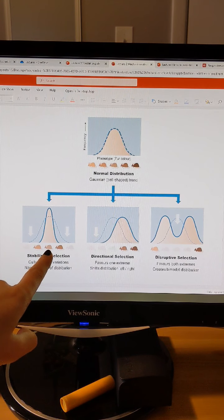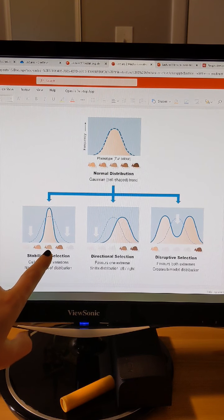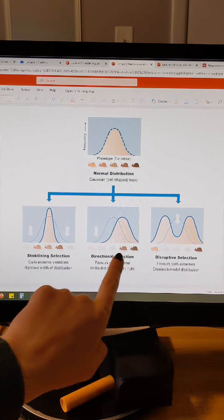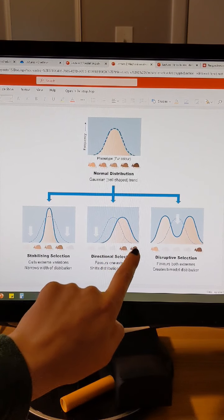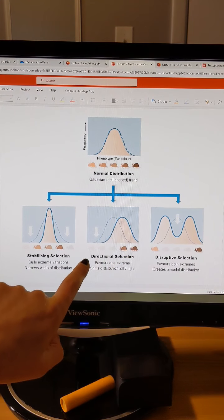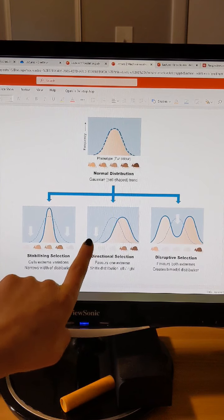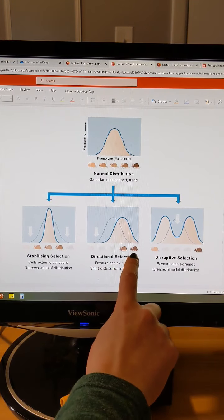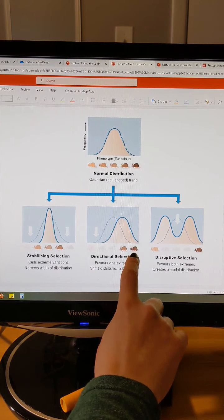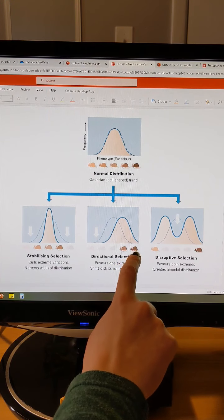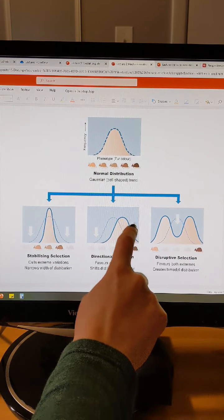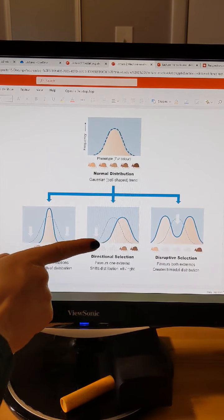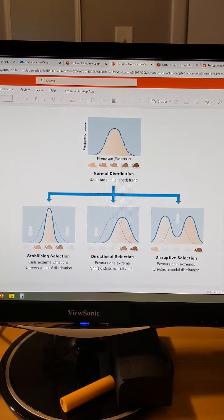Another option is instead of the intermediate mouse having the best reproductive success, the extreme, say the darkest mouse or the lightest mouse, is the most favorable. Like if we were talking about the widow bird again, it would be the shortest tail or the longest tail is the most desirable. In that case, this mouse would reproduce most often. Which means over time, these alleles are going to be overrepresented in your population. And the average color of your mouse is going to shift toward the right or the left.